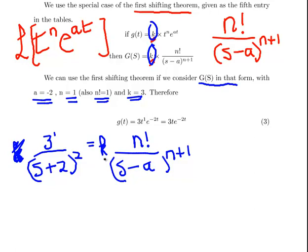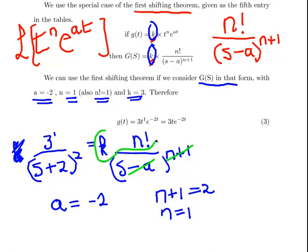So k is just a scalar multiplication. It's k times whatever. So let's go here. a is minus 2. That's straightforward enough. n plus 1 necessarily has to be 2, and therefore n is going to be 1. We got this bit, we got that bit. This bit here is what we need to sort out.